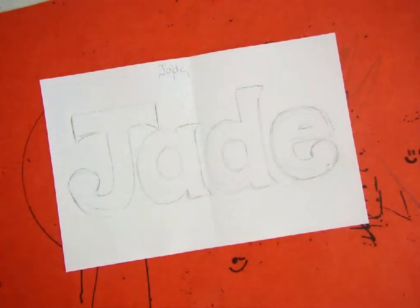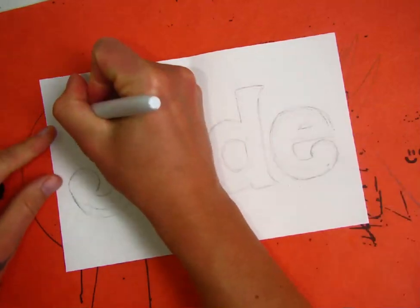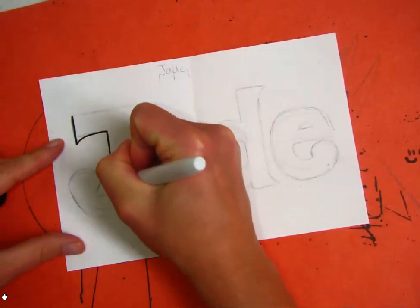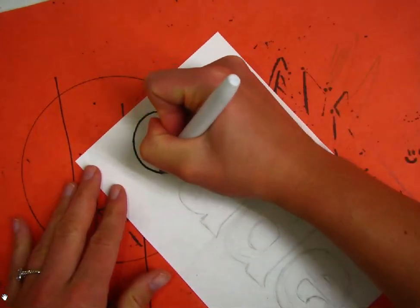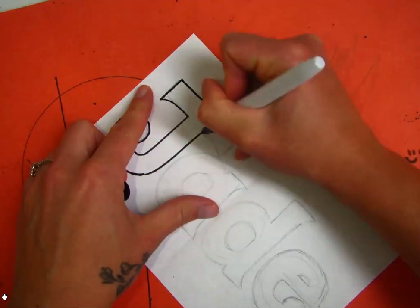Once you're happy with how it looks very lightly done in pencil, you're going to go over all of your permanent areas with a thick Sharpie.